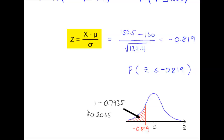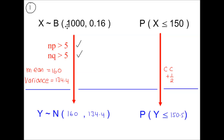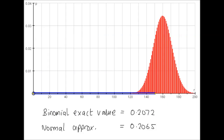We can compare our approximation with the exact probability from the binomial distribution. A computer model gives the exact probability as 0.2072. The normal approximation gave 0.2065 — a very good approximation.